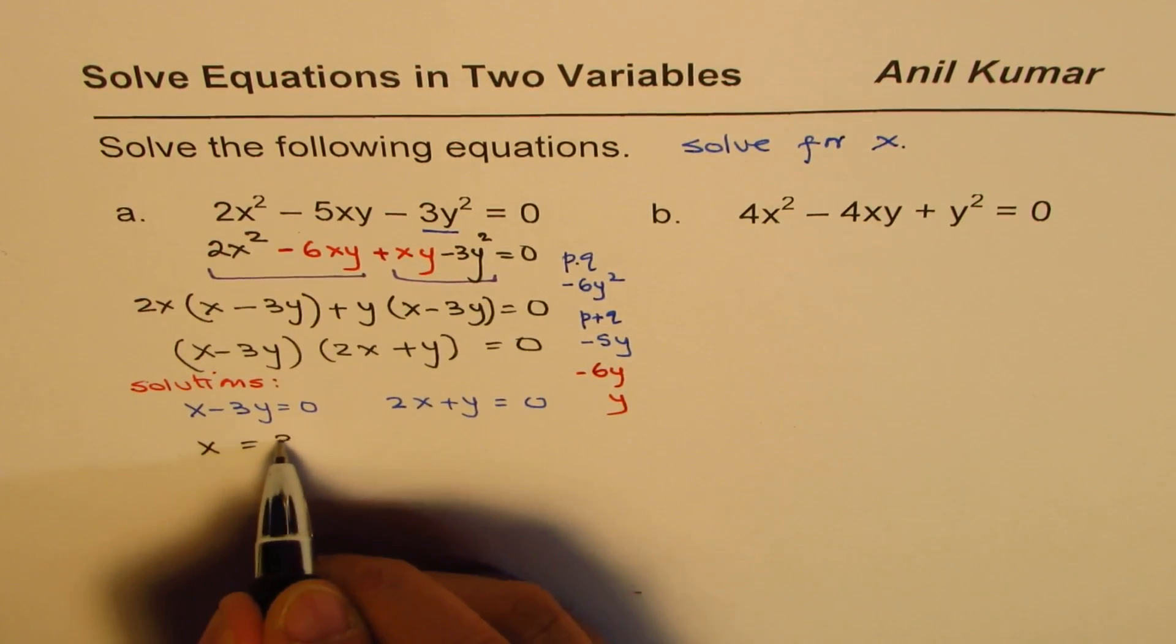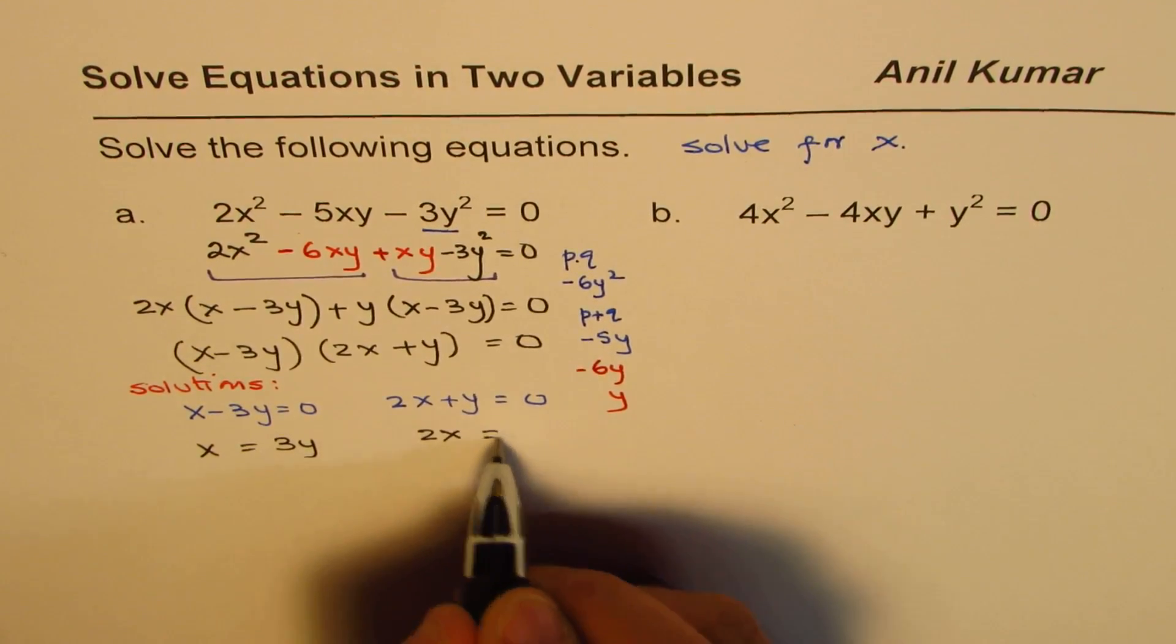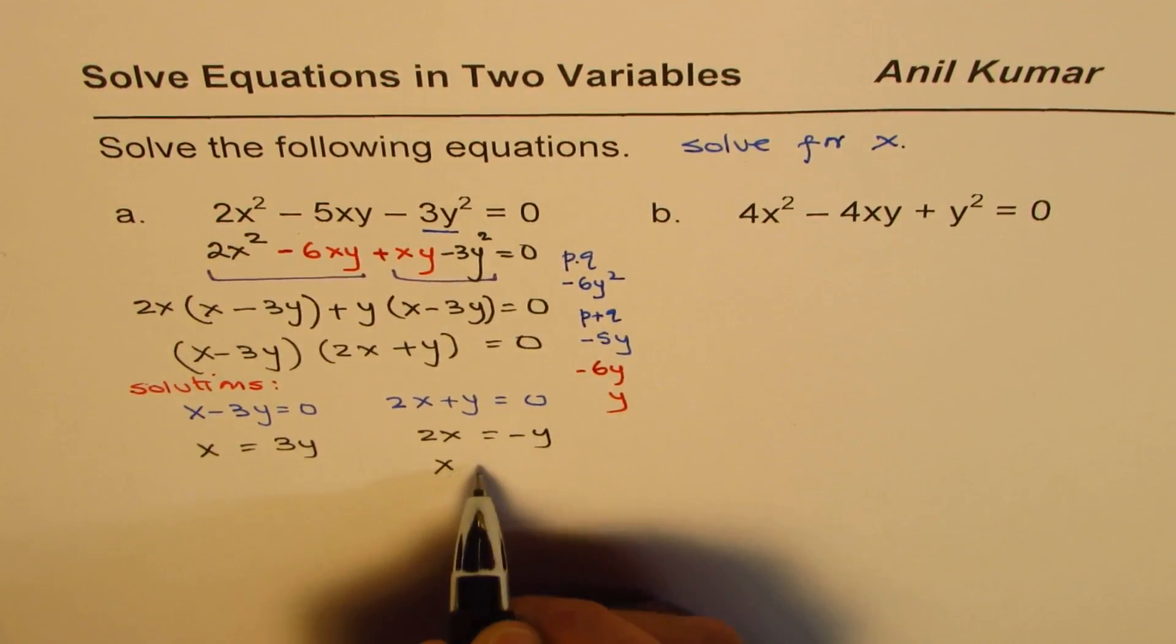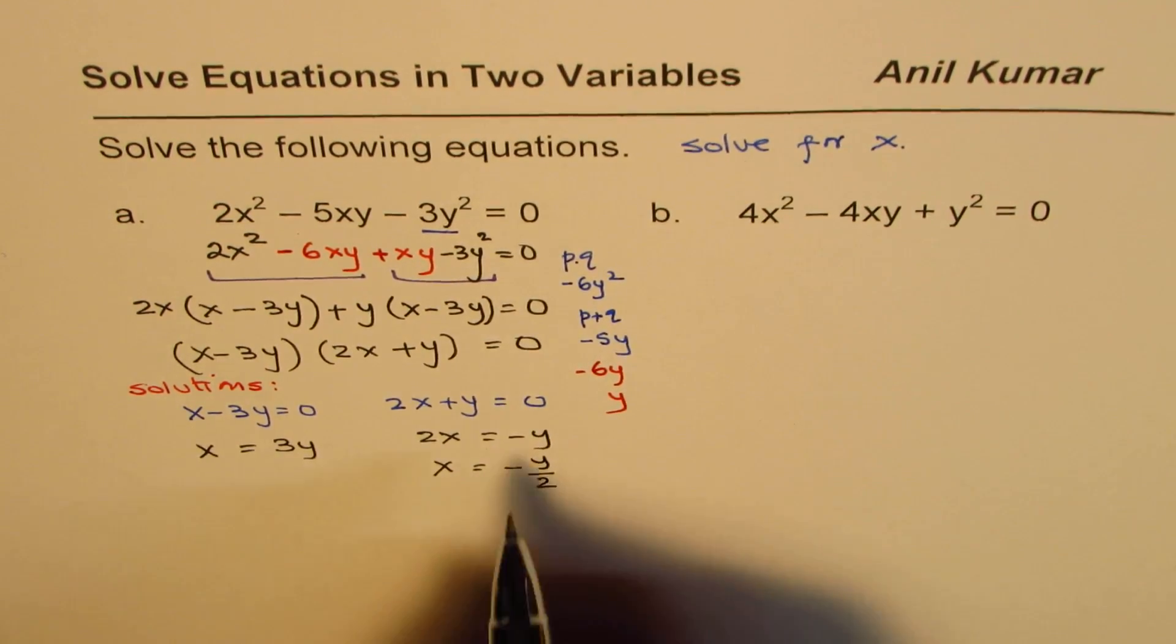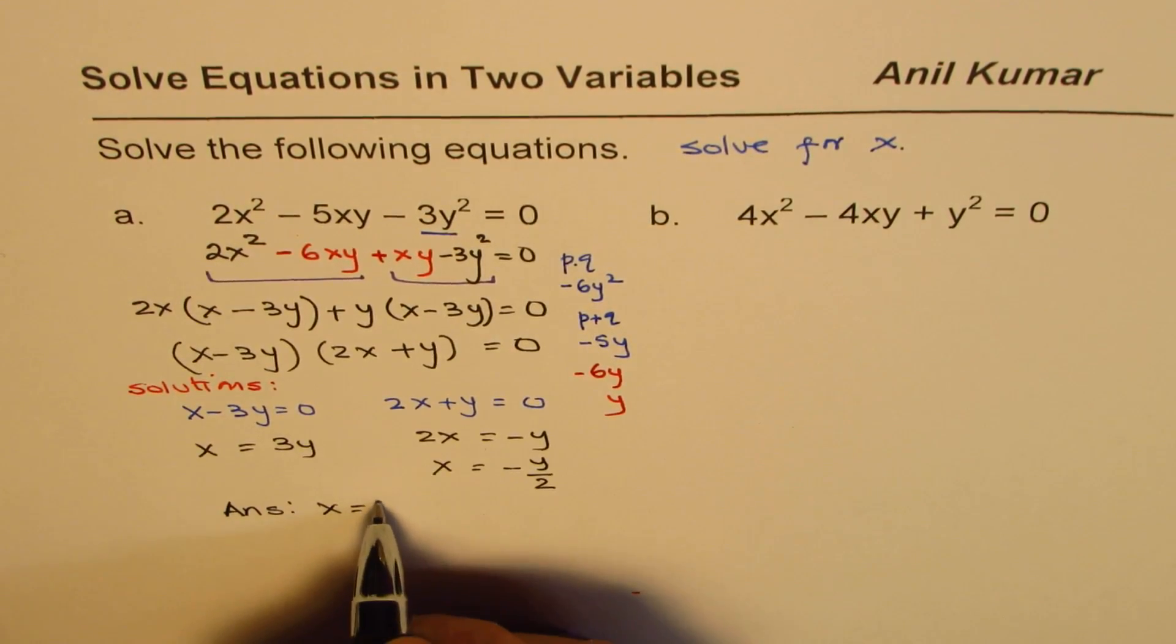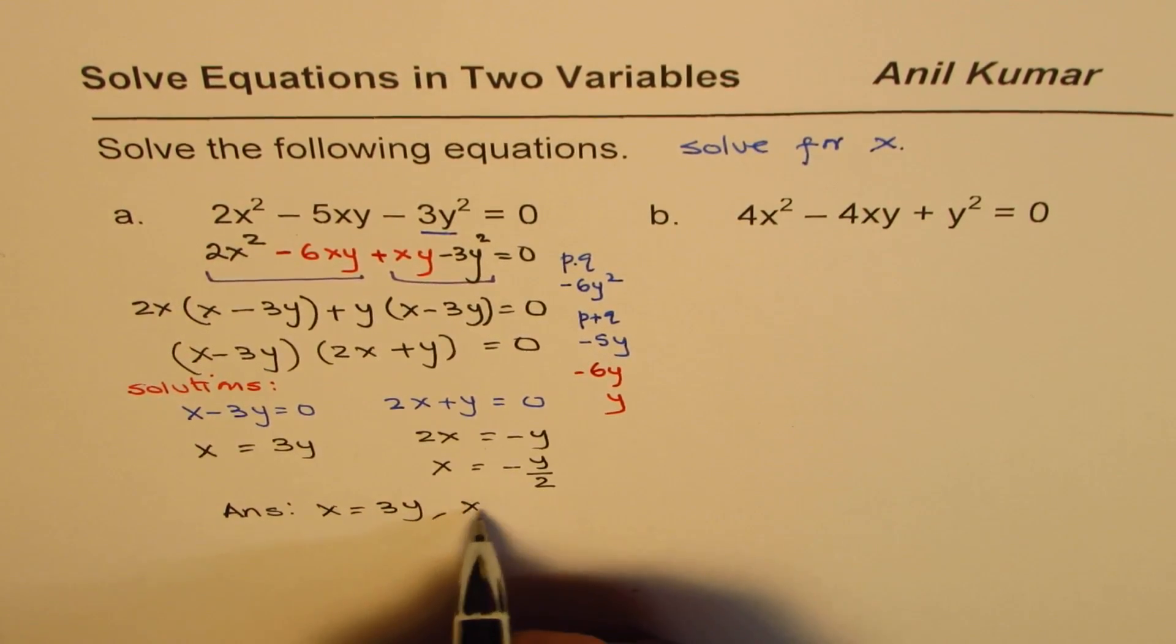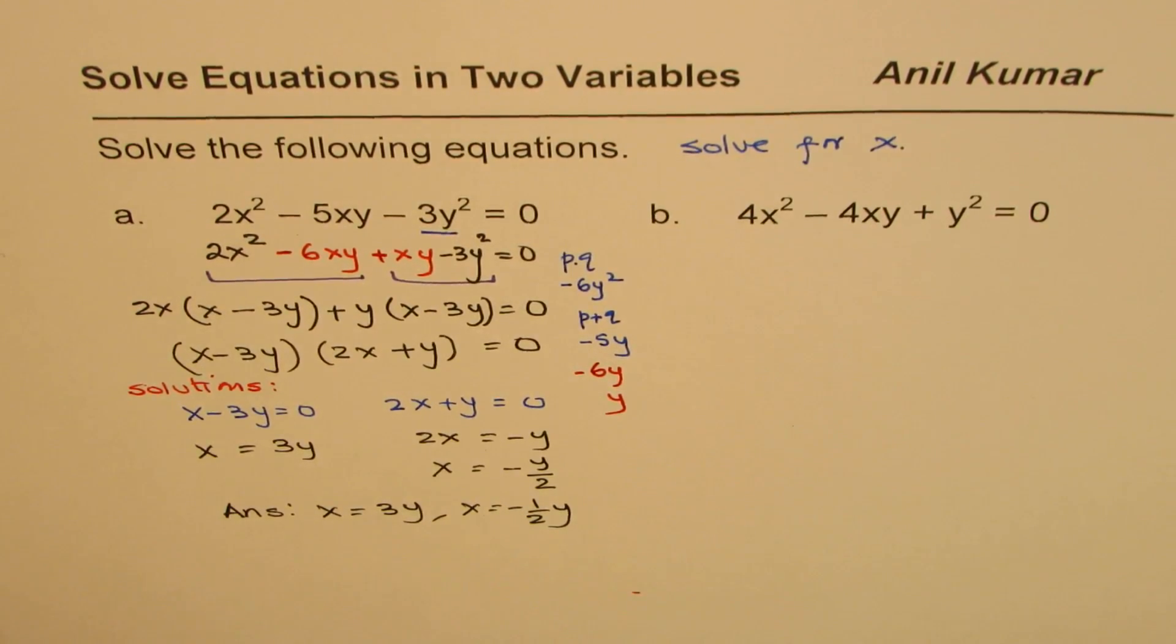So we get x equals to 3y. And here, we get 2x equals to minus y, or x equals to minus y over 2, or minus half y. So we have two solutions. Our answer is x equals to 3y, and x equals to minus half y. So I hope the steps are clear.